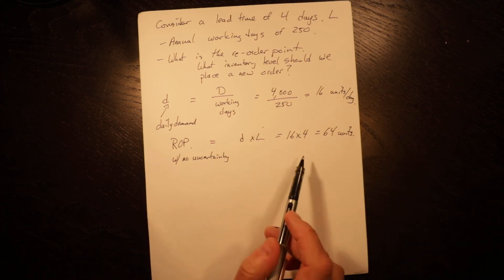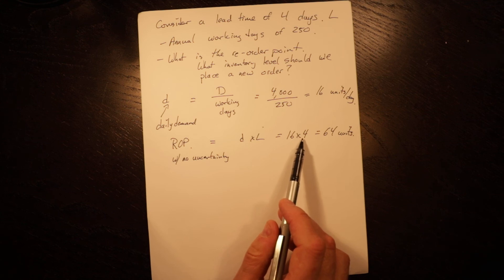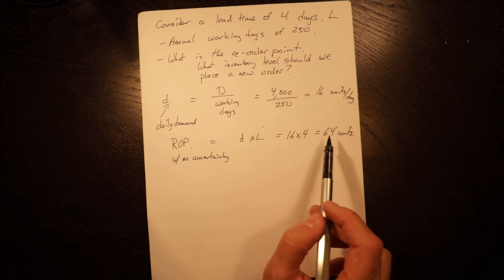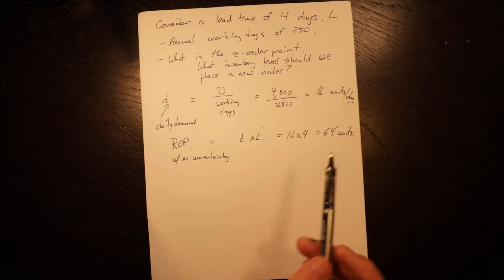In this case, it's exactly four days ahead of when you'll need it. It's 16, which is your daily demand, times the four days it takes to get here. So when your inventory hits 64 units, you should order more.